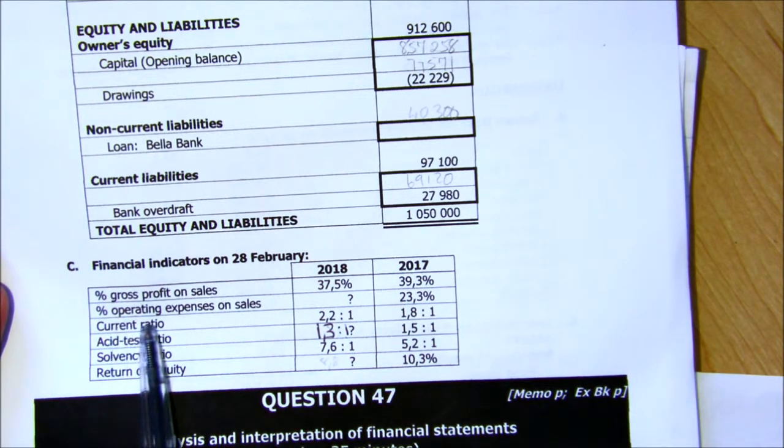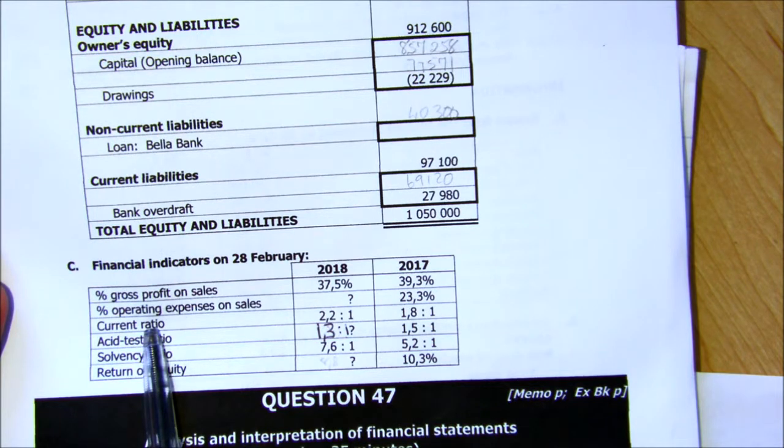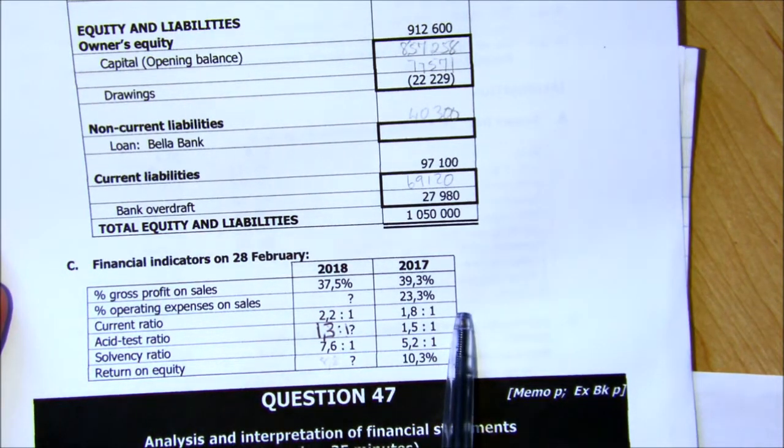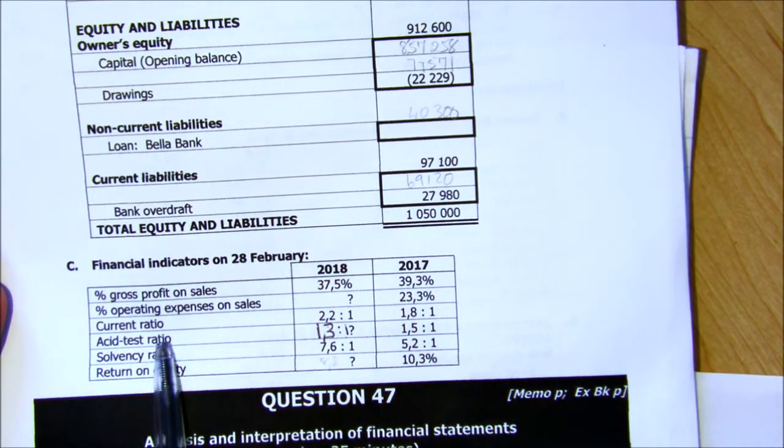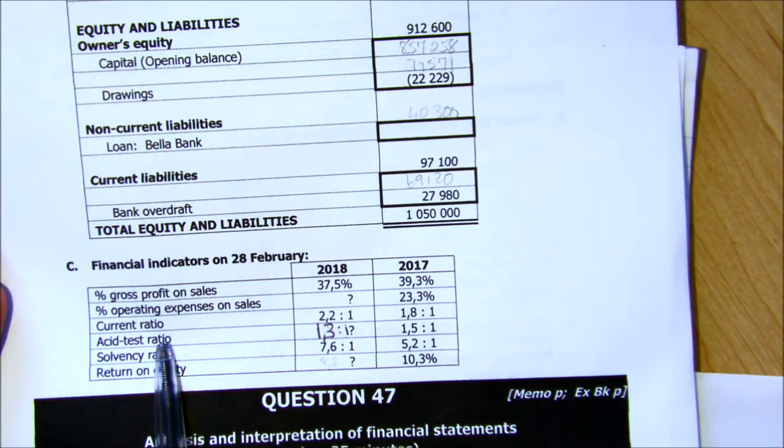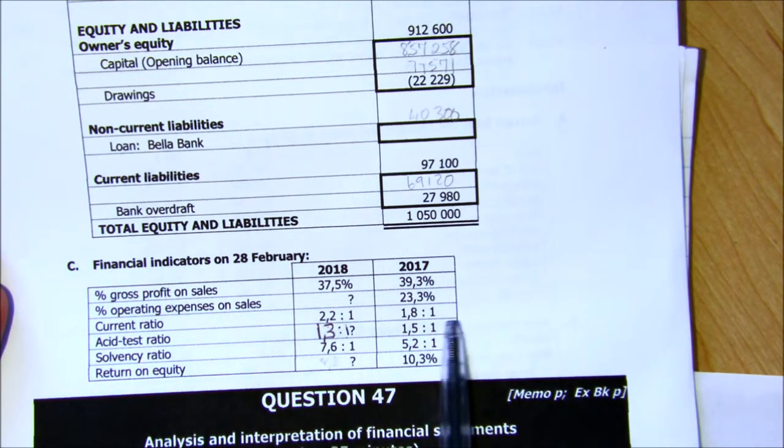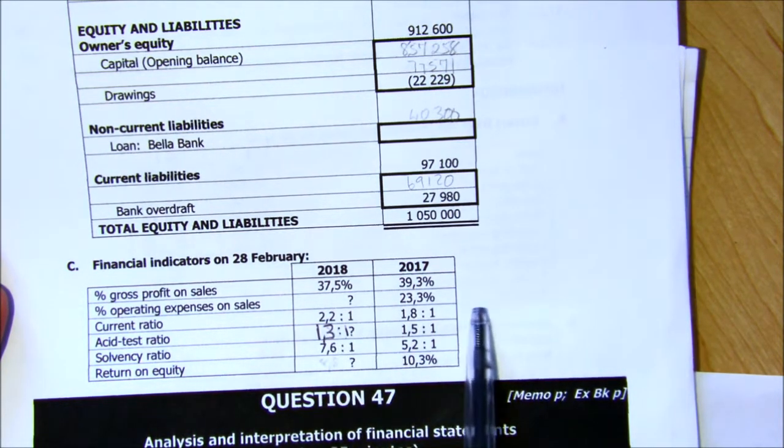Current assets, the current ratio is your current assets as a ratio to your current liability. And the acid test ratio takes away stock. We have got some answers worked out for you.